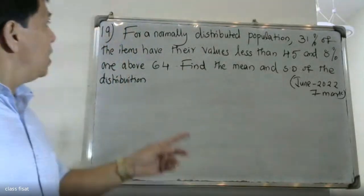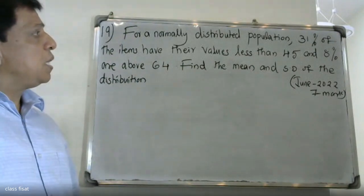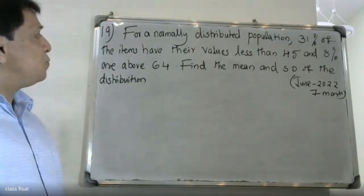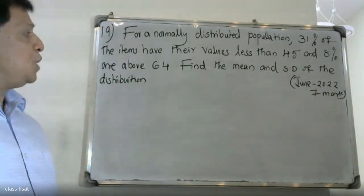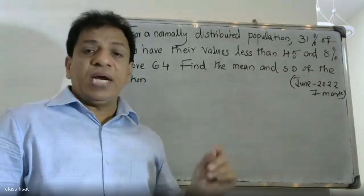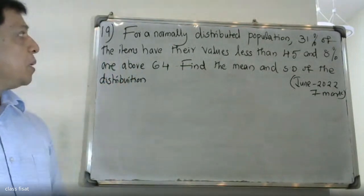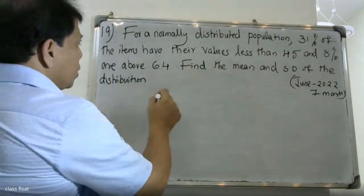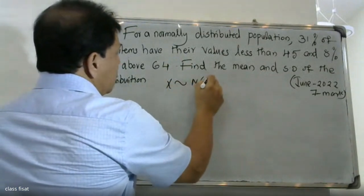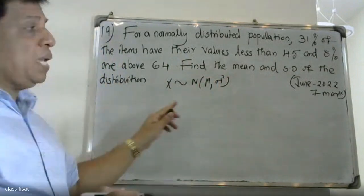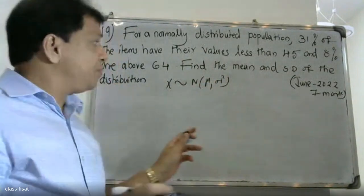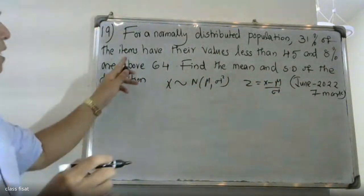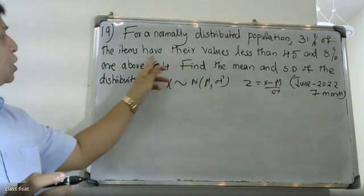Good morning students. Question: for a normally distributed population, 31 percent of items have their values less than 45 and 80 percent are above 64. We need to find the mean and standard deviation. We start with X follows N(μ, σ²), where μ is the mean, σ² is the variance, and σ is the standard deviation. We use the standardization z = (X - μ)/σ.